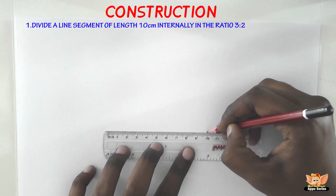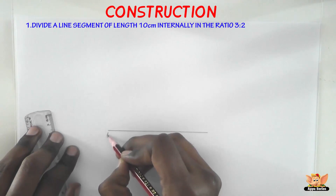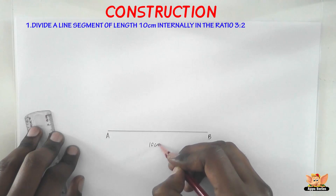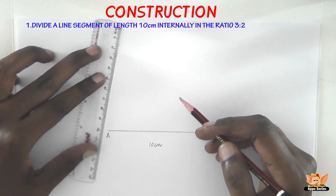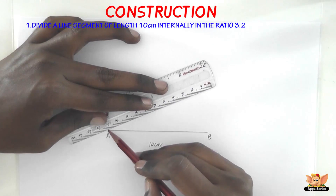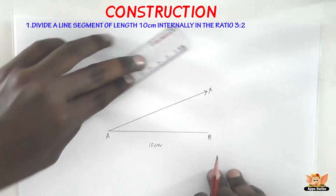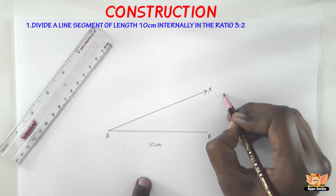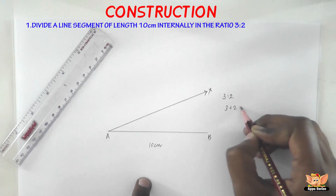Now let's start to divide this line of 10 centimeters internally in the ratio 3 is to 2. The first step is to draw the line segment of 10 centimeters. The second step is to draw an acute angle BAx — just any random acute angle, so you draw a ray AX. Now we need to divide this line segment AB in the ratio 3 is to 2, so you add 3 and 2 to get 5.